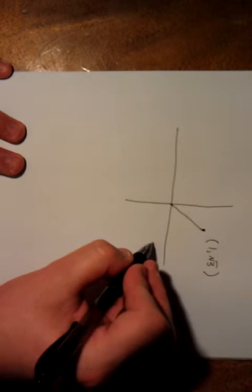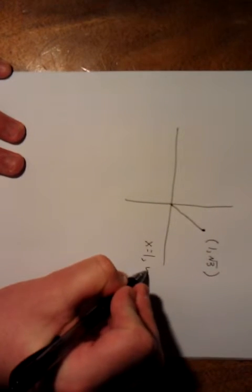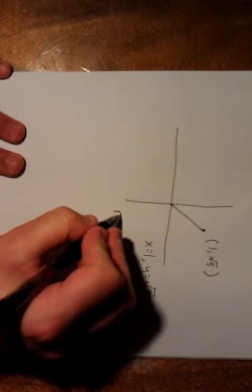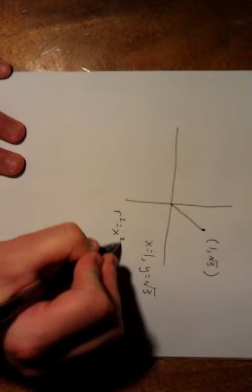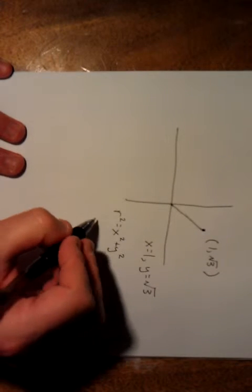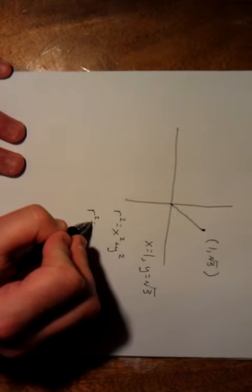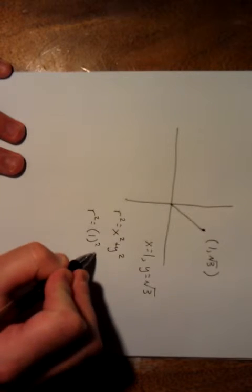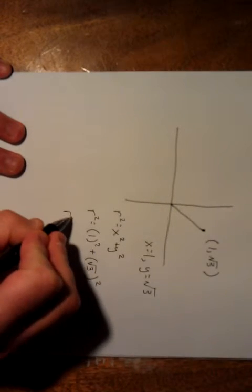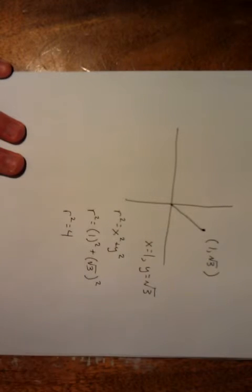What I'm curious is how we can describe that in polar coordinates. So first off, we've got that x is equal to 1, y is equal to the square root of 3. So to calculate r, we could say r squared is equal to x squared plus y squared. Plug in the values for x and y that we have. So r squared is equal to 1 squared plus square root of 3 squared. Simplifying that gives us r equals 4.